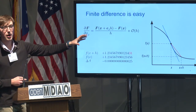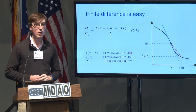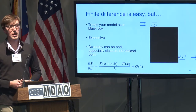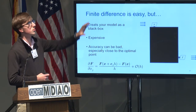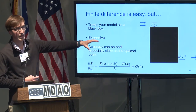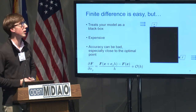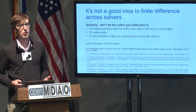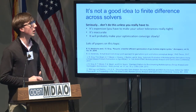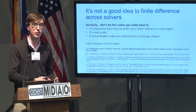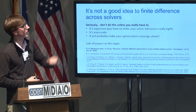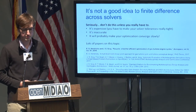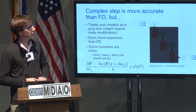Finite difference perturbs your model to get an approximation of derivatives. It's inaccurate and expensive as the problem grows, but easy because you treat your model as a black box. However, you should not finite difference across solvers — we saw results from PyCycle vs. NPSS showing how much information you lose. Complex step is a better method: perturbing in the complex plane gives much more accurate gradients because it doesn't suffer from the same cancellation errors.